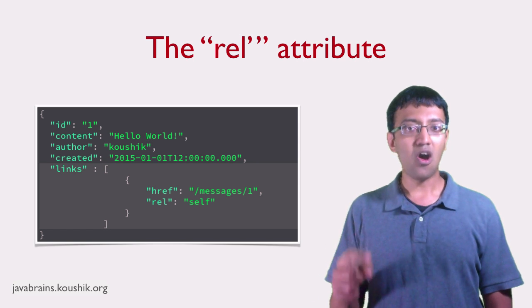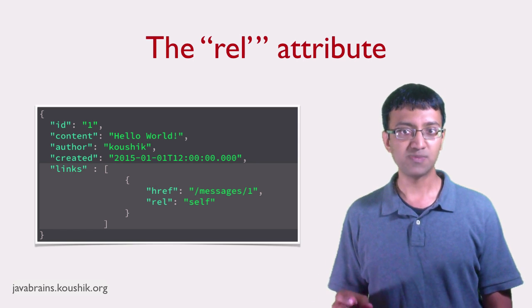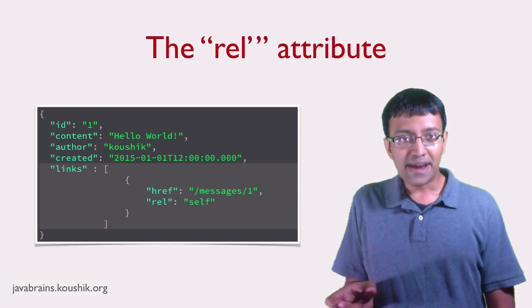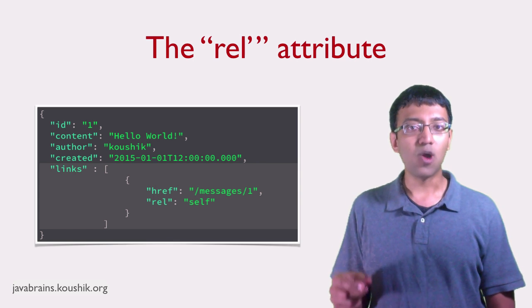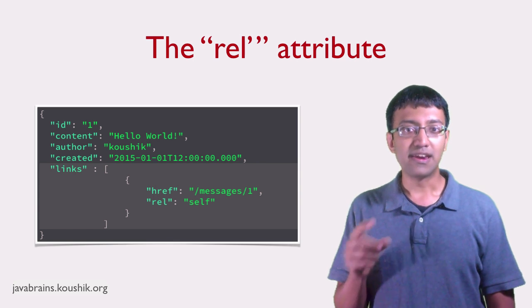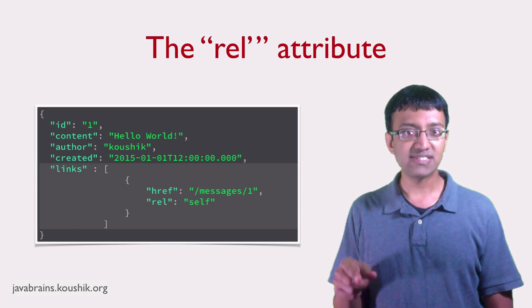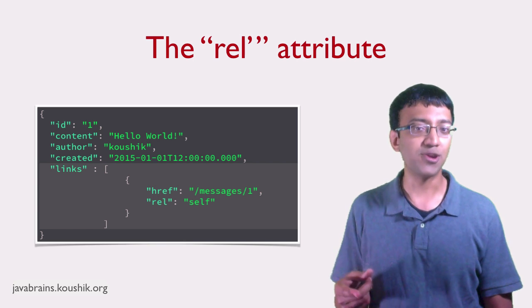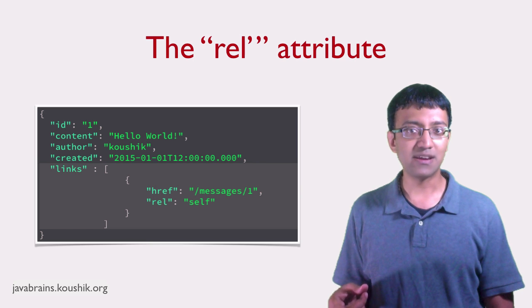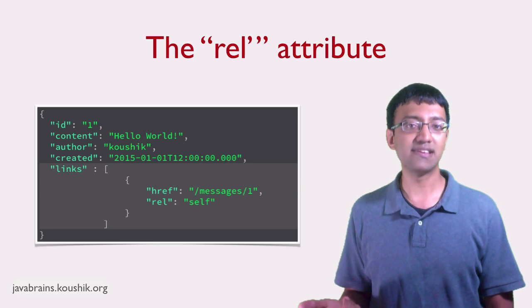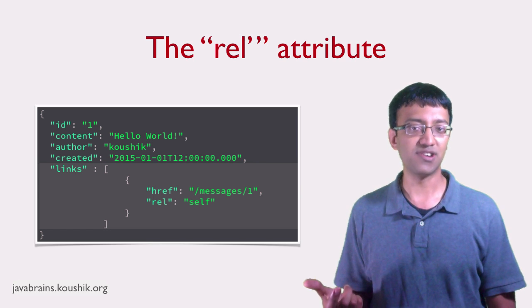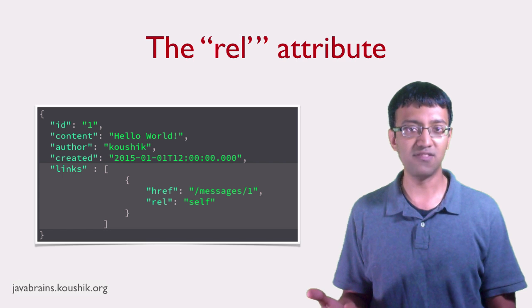And then the rel, it says self, right? We've introduced this new property. Now this is going to contain all the links that you want to embed in the response, right? You add a rel attribute to make it clear what that link points to, right? Rel points to self, which indicates that here the link in the resource is pointing to itself.